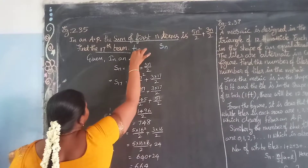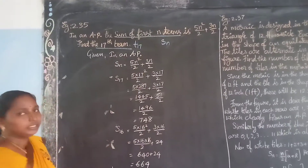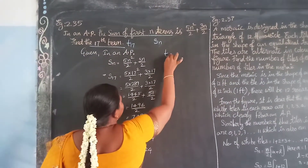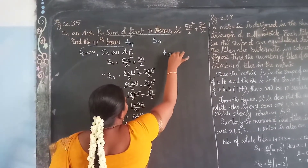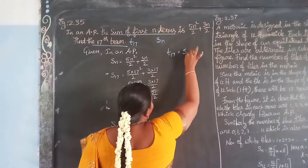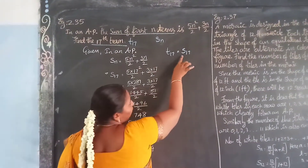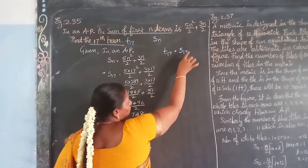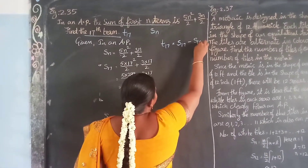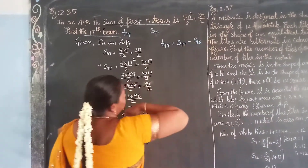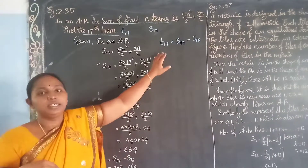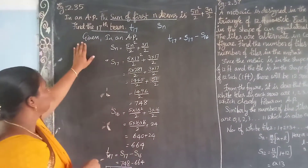17th term means T17. If they are given like this, how to find T17? We are going to use the sum formula. That is S17, which is the sum of first 17 terms, minus S16, the sum of first 16 terms. Then only we get the 17th term.